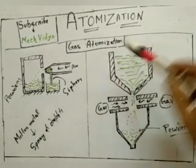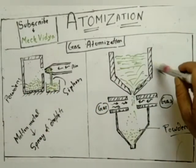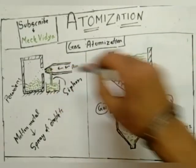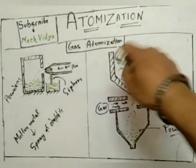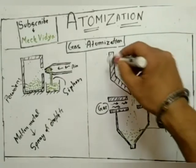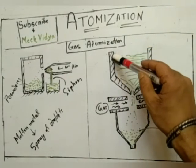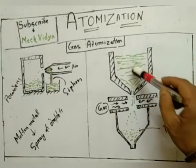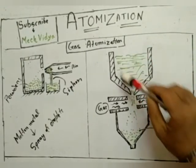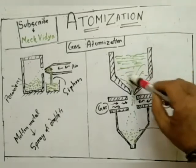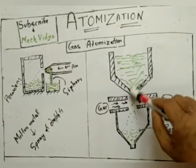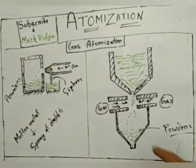In a similar way, in this second setup it is exactly the same, but the configuration is different. Here we have an overhead tank. What happens is we keep our molten metal here in the overhead tank, and this is a converging nozzle. With the help of the nozzle, the molten metal is forced to come out to the collecting chamber.